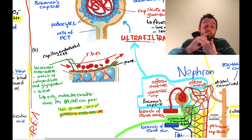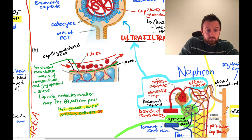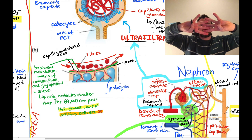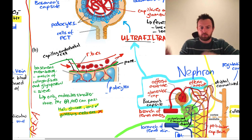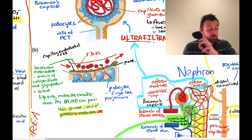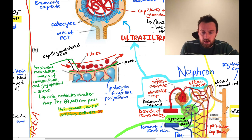There's a third layer: the podocytes — these blue cells with finger-like projections that fit together and hold the basement membrane in place. If you want to get technical, the podocyte structure is divided into major processes and minor processes, all holding the membrane in place.